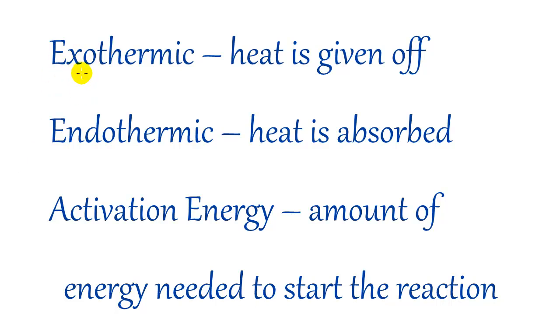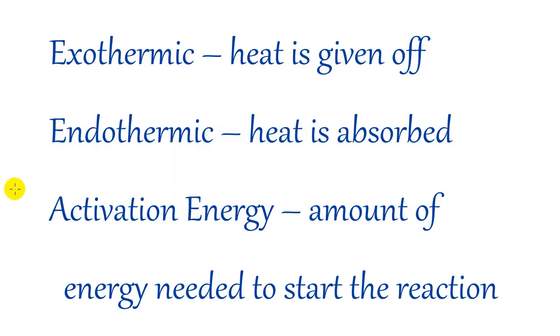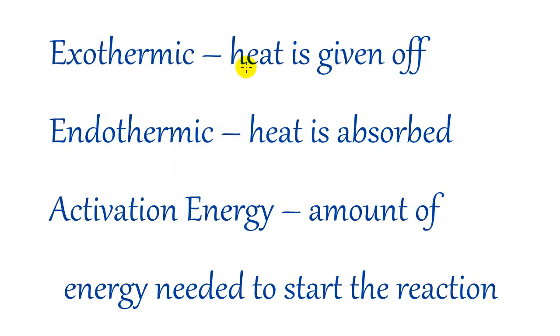Let me explain some terms I'm going to be throwing around. Exothermic is a reaction where heat is given off - one of the products is heat. Endothermic is when heat is absorbed. For example, you may have to add heat to get a chemical reaction started and it absorbs some of that heat.